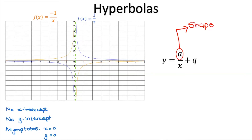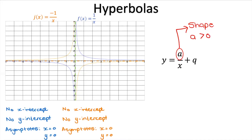There's still no x-intercept, no y-intercept, and the asymptotes are still the same. But we can generalize: when a is greater than zero, the graph is always in the top right and bottom left quadrants (1 and 3); when a is less than zero, the graph is always in the top left and bottom right quadrants (2 and 4).